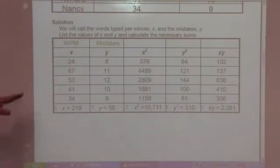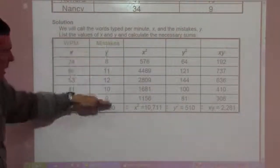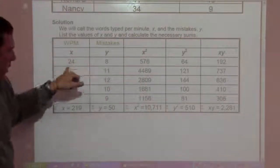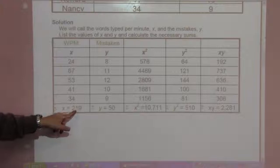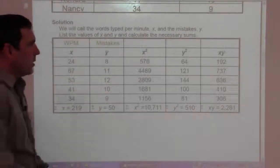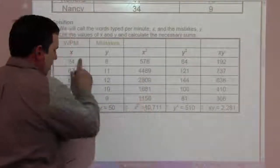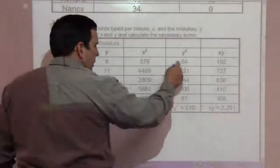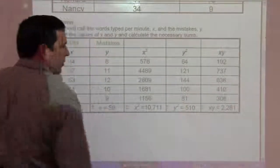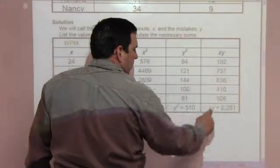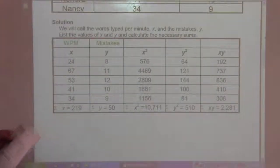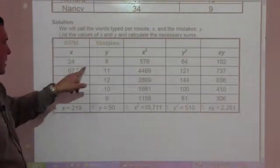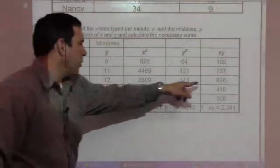We look at this table with words per minute as X and mistakes as Y. The X-squared column is just squaring those X values. We compute the sum of all X's and the sum of all Y's. We also compute all the X-squareds, their sum, all the Y-squareds and their sum, and the XY column — which represents 24 times 8, 67 times 11, 53 times 12, and so on.